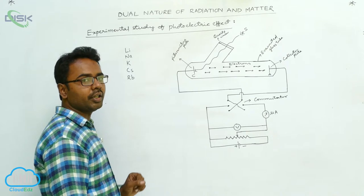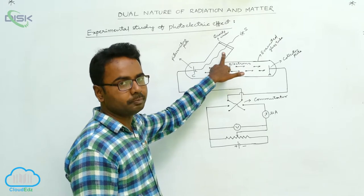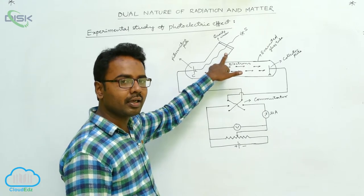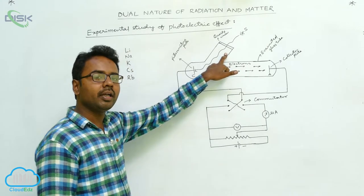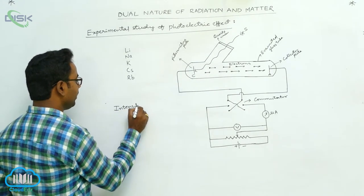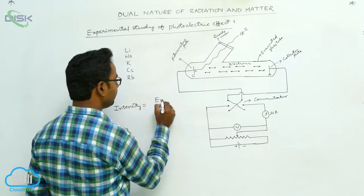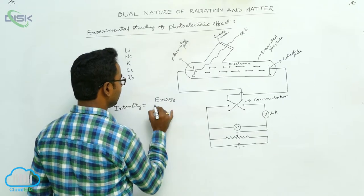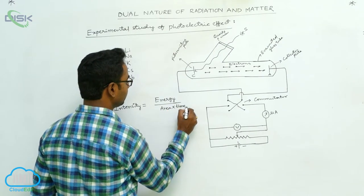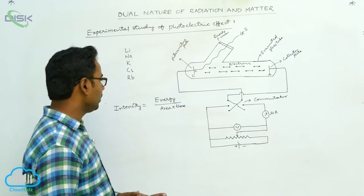Now we study the effect of the intensity of incident radiation on the photocurrent — how does photocurrent change with the intensity of incident monochromatic light? Intensity is defined as the amount of energy incident per unit cross-sectional area per unit time.